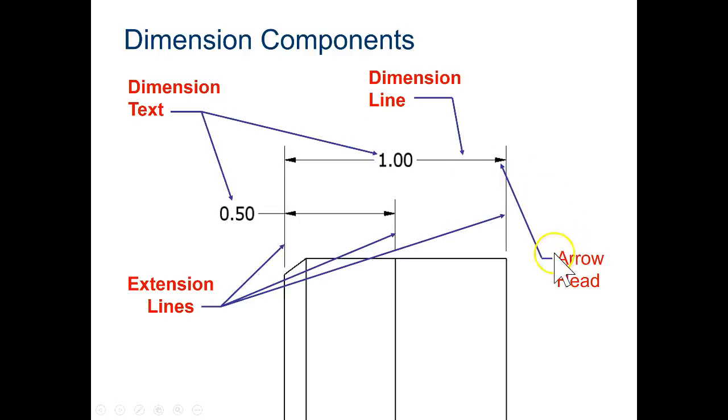And then the arrowheads help us understand the difference between extension lines and the object lines themselves. This is where the dimension lies.